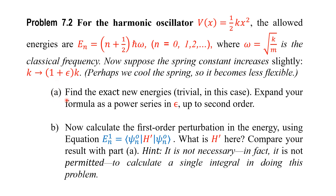The question asks: find the exact new energy, which is trivial in this case. Then expand your formula as a power series in ε up to second order. Next, calculate the first-order perturbation in the energy using E_N1 = ⟨ψ_N^(0)|H'|ψ_N^(0)⟩. What is H' here? Compare your result with Part A. The hint is that it is not permitted to calculate a single integral — you must do it without integrals.